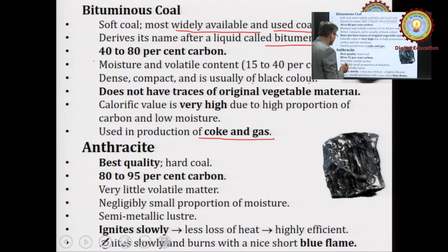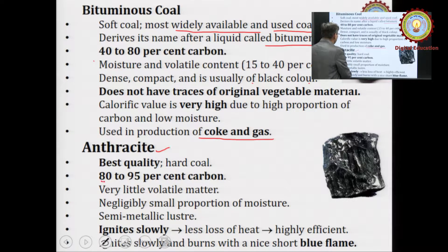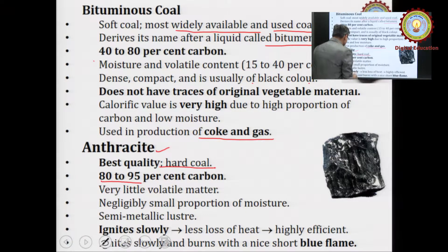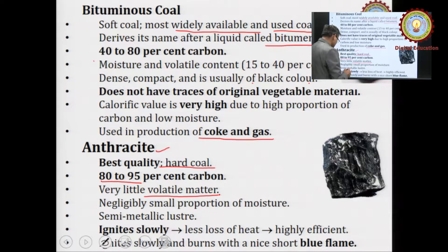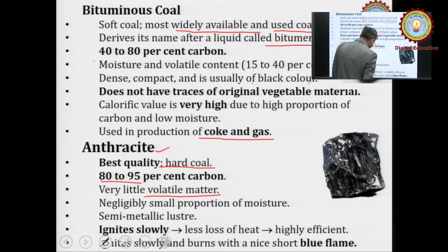The best quality of coal is anthracite. It contains about 80 to 95 percent carbon. It is a hard quality of coal with very little volatile matter present, a negligibly small proportion of moisture, semi-metallic luster, and a shiny surface. It ignites slowly, with less loss of heat, and is highly efficient. It burns with a blue flame.